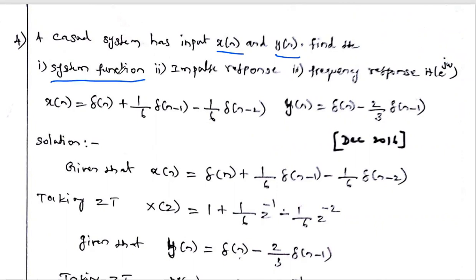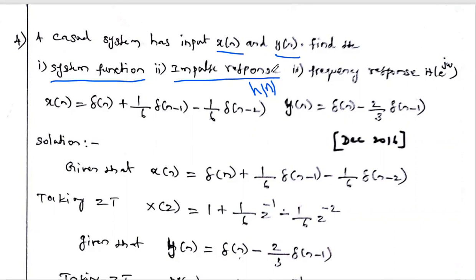The first question is to find the system function — what is meant by system function, capital H(z)? System function or transfer function we have to calculate. The next one is we have to find the impulse response, small h(n). What is the relation between the system function and impulse response? If you take the inverse Z-transform of the system function, we will get the impulse response.